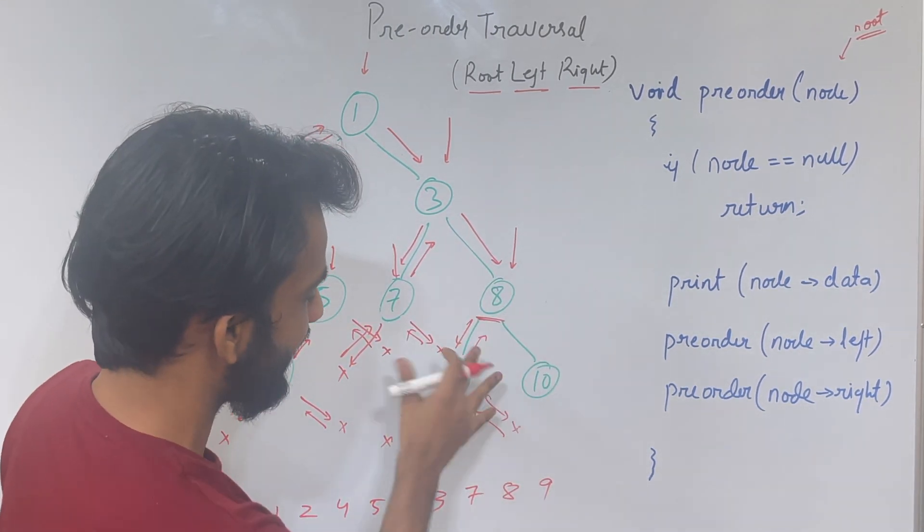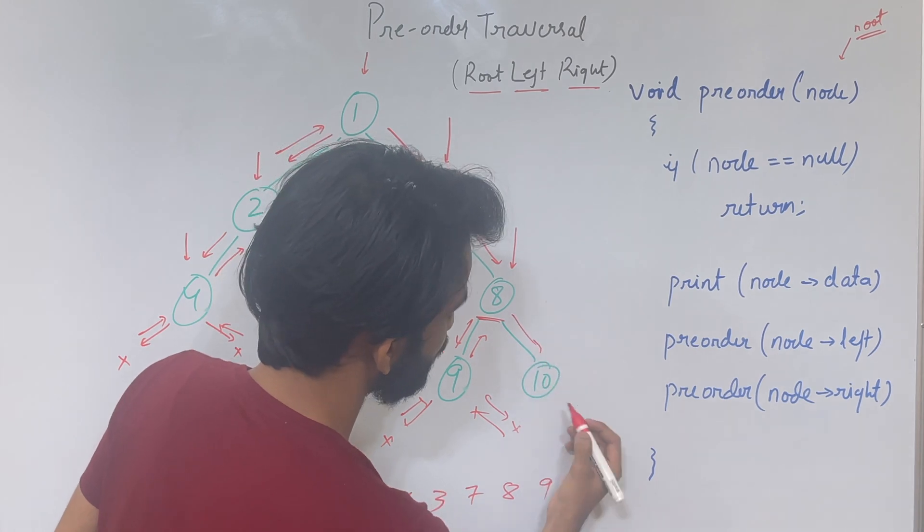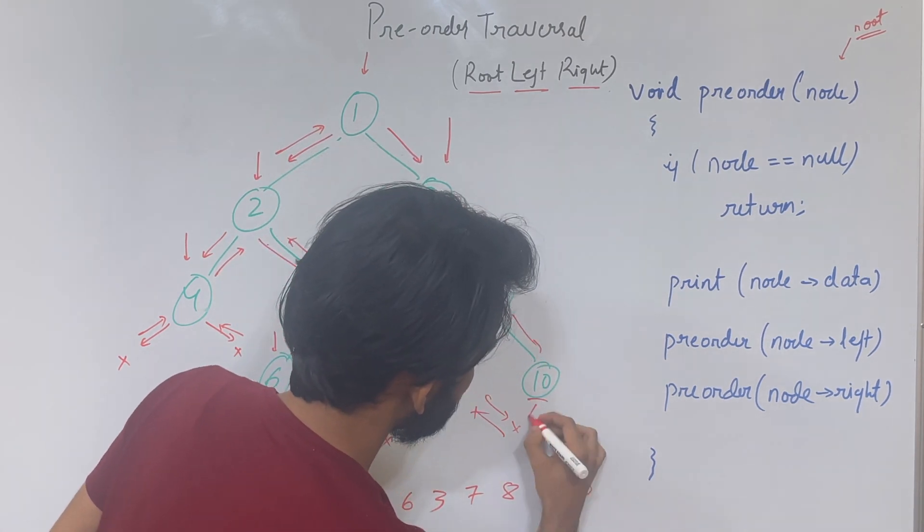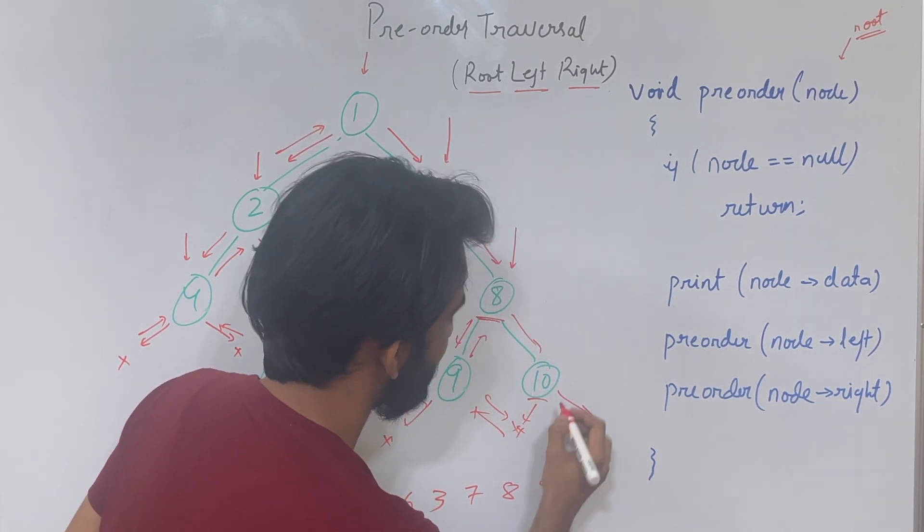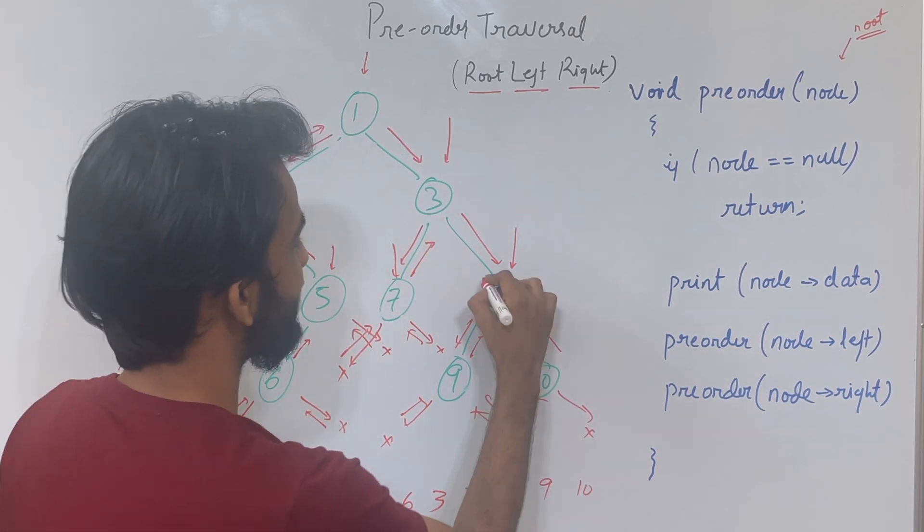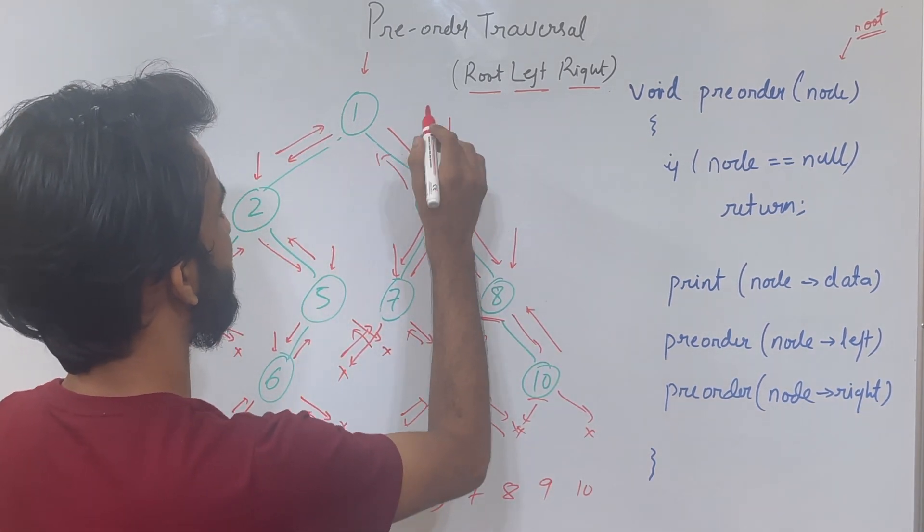For node 8, print and left are done, right is there. So it goes, prints 10. Goes to the left—nothing. Goes to the right—nothing. Goes back. Node 8 is completed, goes back. Node 3 is completed, goes back. Tree completed.